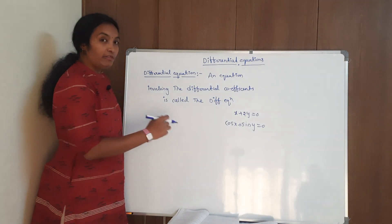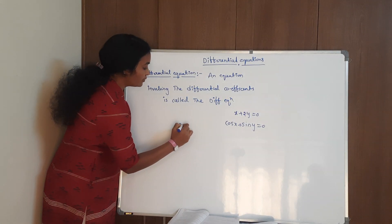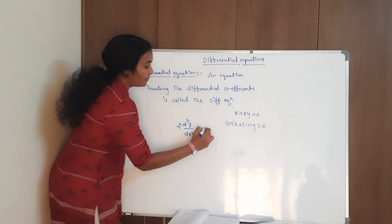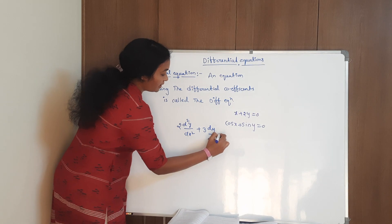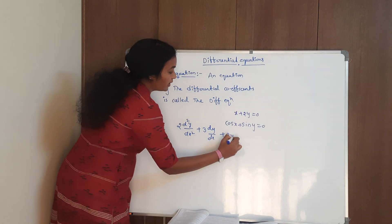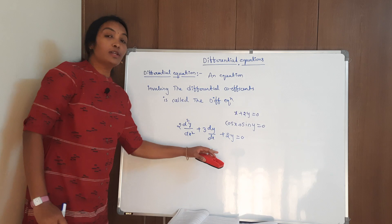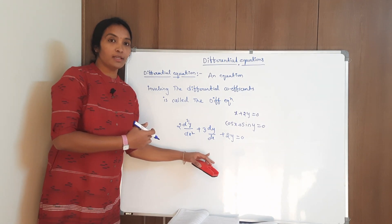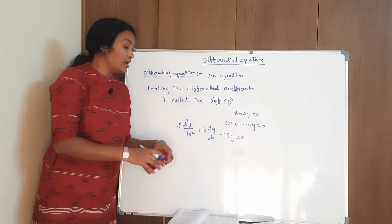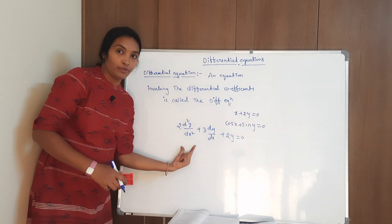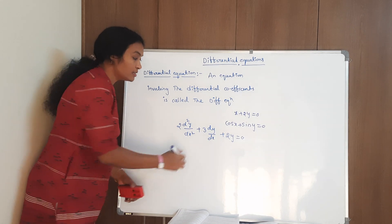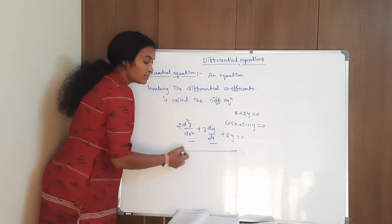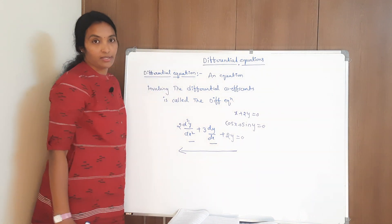For example, consider an equation like this: 2 into d square y by dx square plus 3 dy by dx plus 2y is equal to 0. What type of equation is this? This is a differential equation. How can we say this is a differential equation? This equation involves differential coefficients — these two terms are the differential coefficients. So this equation is called a differential equation.